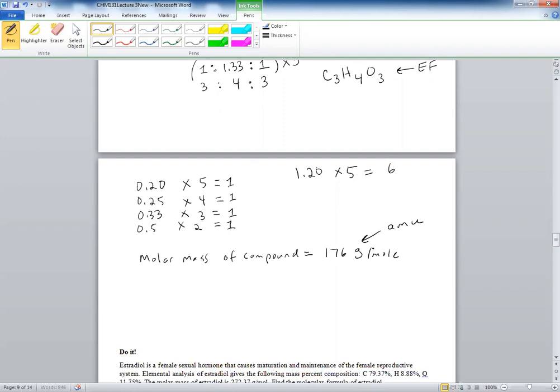So the molar mass of the compound, they found out that it was 176. How then can we get more information on the molecular formula? Well, you'd have to actually use the empirical formula this way. So what you need to do next is find the molar mass of the empirical formula.